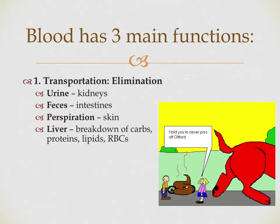We also need blood transport to get rid of waste products. Elimination of waste products from the kidneys occurs in the form of urine, through filtration of the blood through the nephrons. We also have production of fecal matter at the intestines, perspiration from the skin or the oral cavity and foot pads in our patients, and elimination of breakdown products from the liver — waste products from the breakdown of carbohydrates, proteins, lipids, and red blood cells.